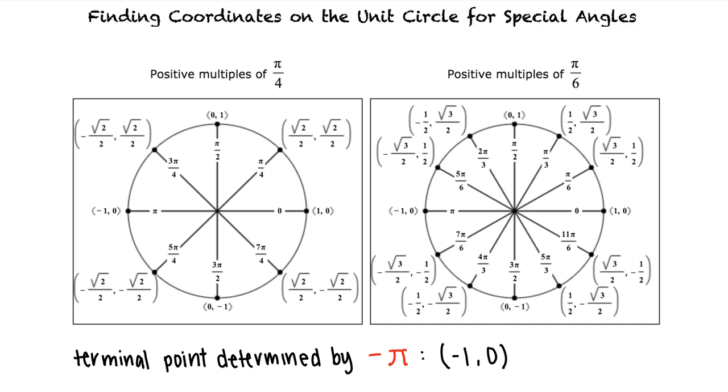Great job. Okay, so when finding the coordinates on the unit circle for special angles, we should know the terminal points that correspond to angles with positive multiples of pi over 4 and pi over 6 on the unit circle. That's exactly right. Great work.